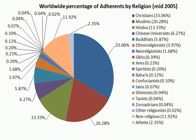Indian religions, sometimes also termed Dharmic faiths or religions, are the religions that originated in the Indian subcontinent, namely Hinduism, Jainism, Buddhism and Sikhism. These religions are also all classified as Eastern religions.